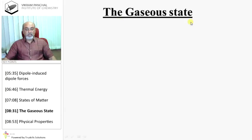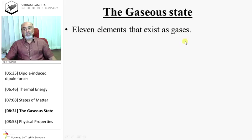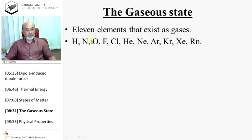The gaseous state. There are 11 elements that exist as gases: hydrogen, nitrogen, oxygen, fluorine, chlorine, helium, neon, argon, krypton, xenon, and radon.